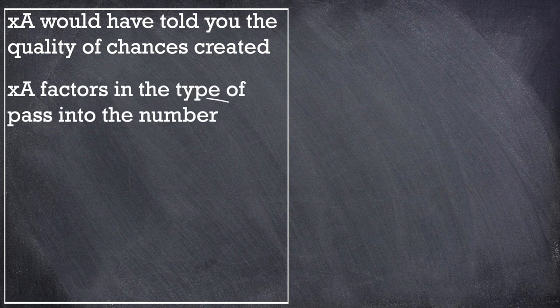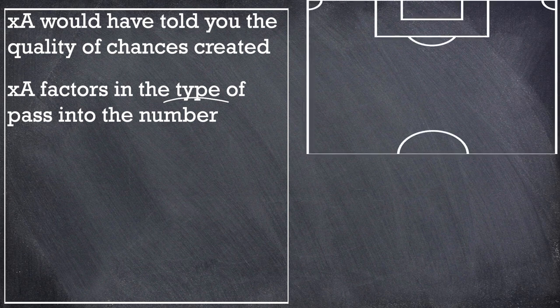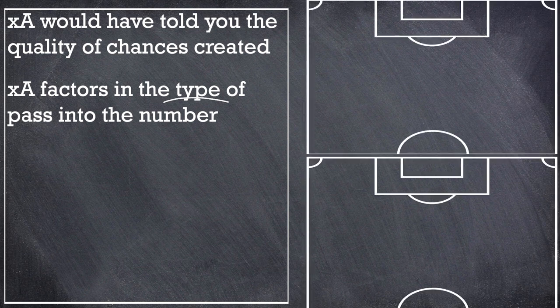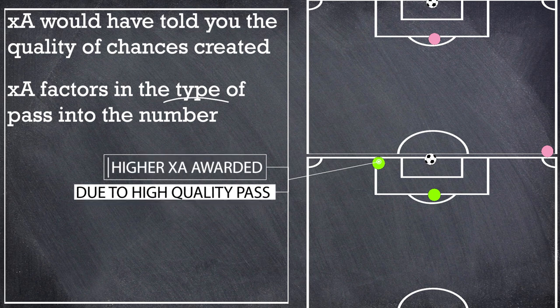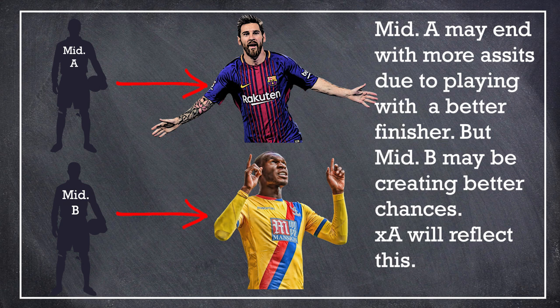To make things even better, expected assists factors in the type of pass into the number. So let's say two passes end up with the striker taking a shot from the same position, but one of the passes was a long diagonal ball with a header on target being the result, and the other is a cutback from a good area with a shot on target with the foot being the result. Expected assists would score the second pass much higher. It may also be the case that one midfielder plays with an elite forward who makes the assist numbers look good, but the other is playing with a lower level finisher. So as a scout you would want the better creator, not just the one who happens to play with a better finisher.